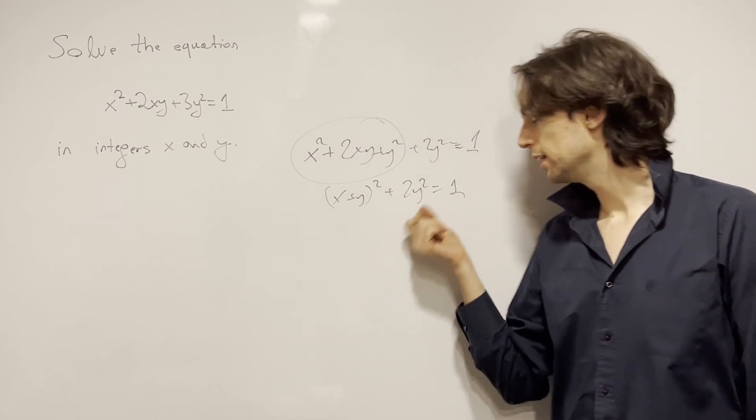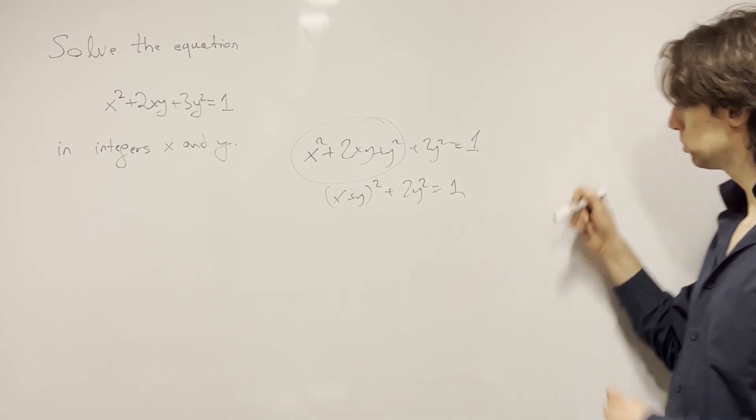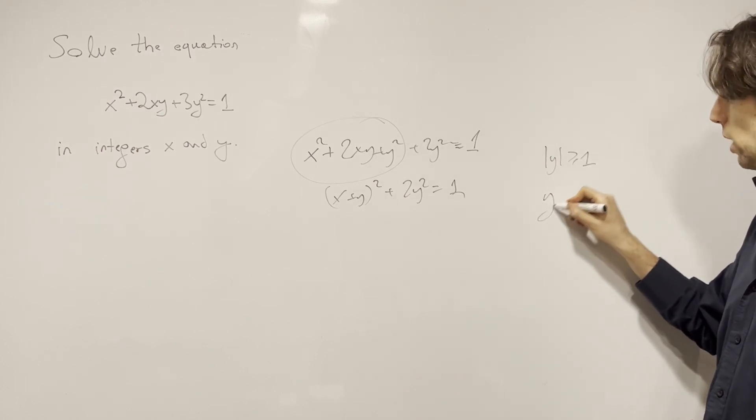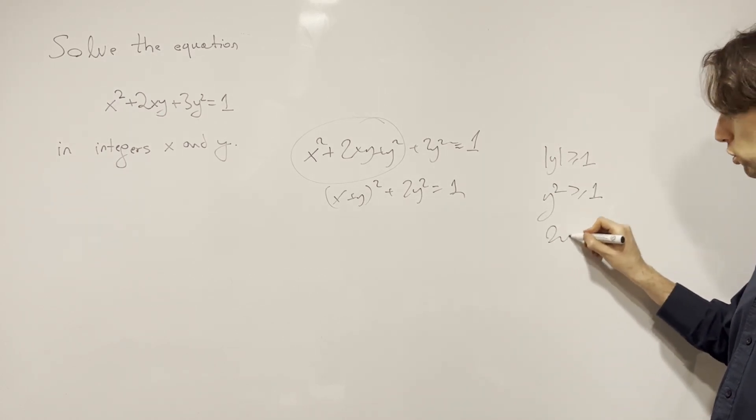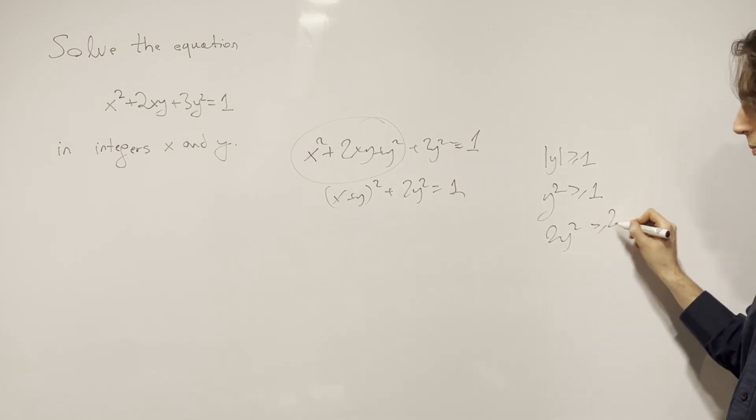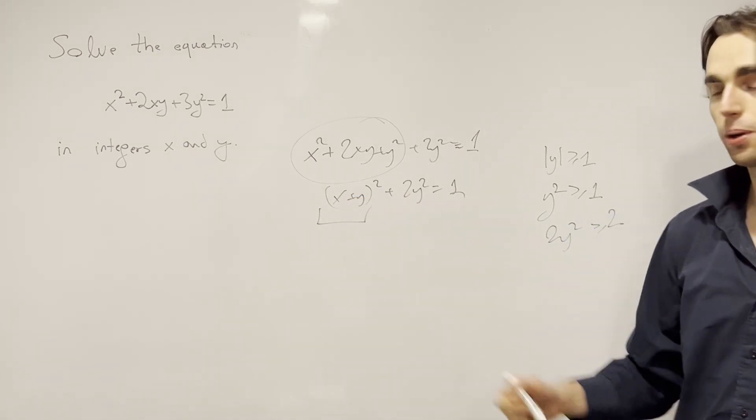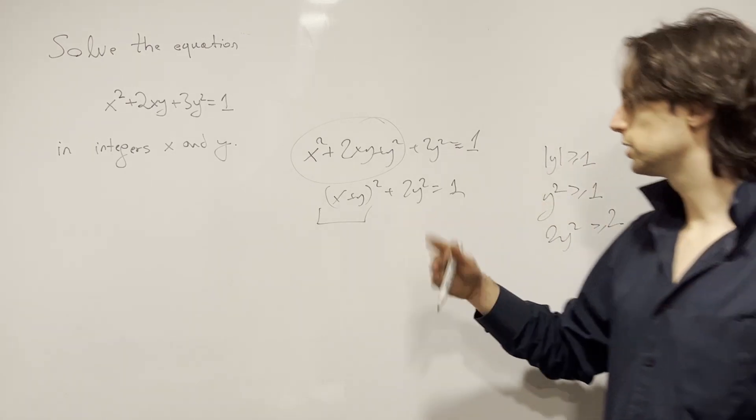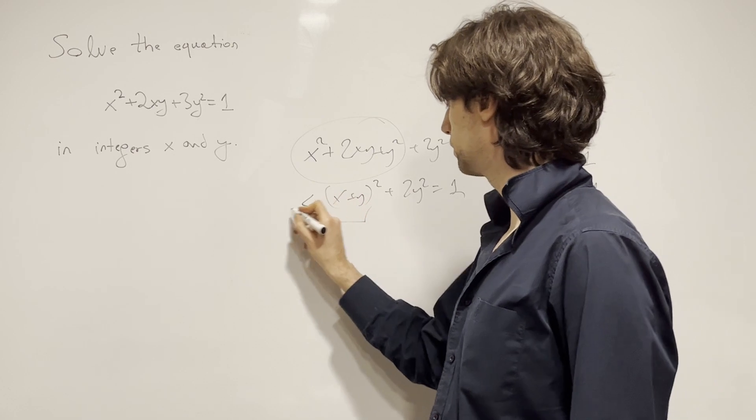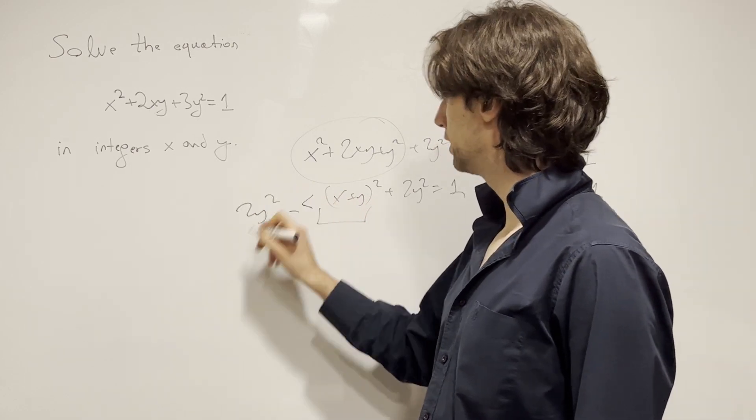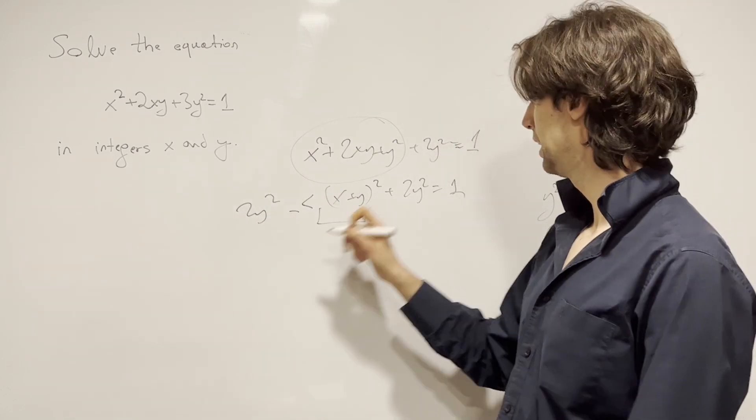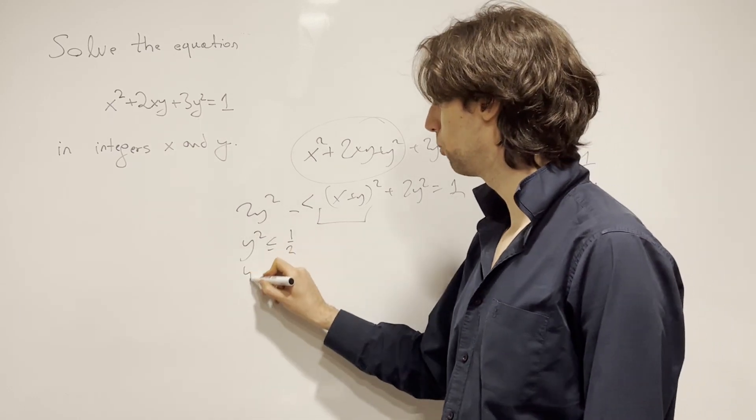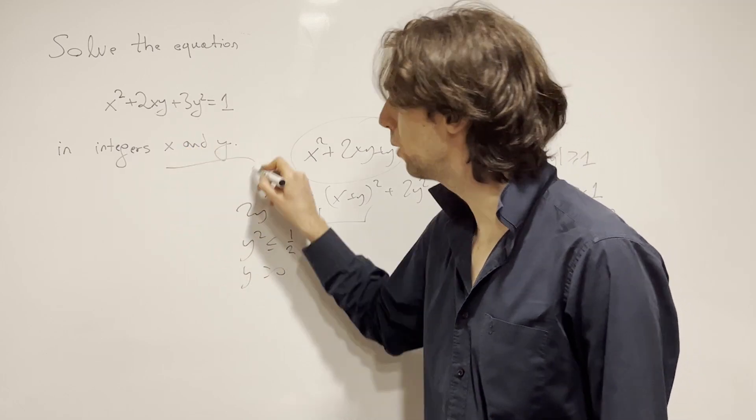And now we can say, oh wait, if y, if the absolute value of y is greater than or equal to 1, then y² is greater than or equal to 1. And then 2y² is greater than or equal to 2. However, (x + y)² is greater than or equal to 0. So this will give us a contradiction. Or in other words, if you want to go down this route, this is greater than or equal to 2y² plus 0. And so y² is less than or equal to 1 half, which means that y needs to be equal to 0 because y is an integer.